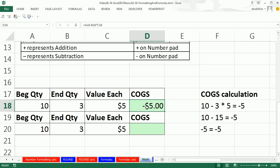Beginning inventory minus ending inventory times the value for each. Why am I getting minus 5? It's because of the order of operations. If you want to do your subtraction,